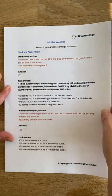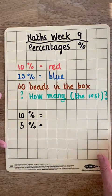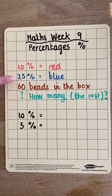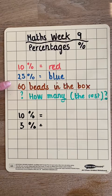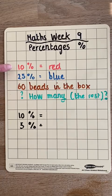To help answer that question, in my notes I've written down the information so I can see what information I'm given, and that's going to help me find my answer. We know that 10% are red, 25% are blue, and that we have 60 beads in the box. After the 10% and 25%, the rest will be green, but we don't know how many that is. We don't yet know how many red and how many blue there are — we only know the percentage.